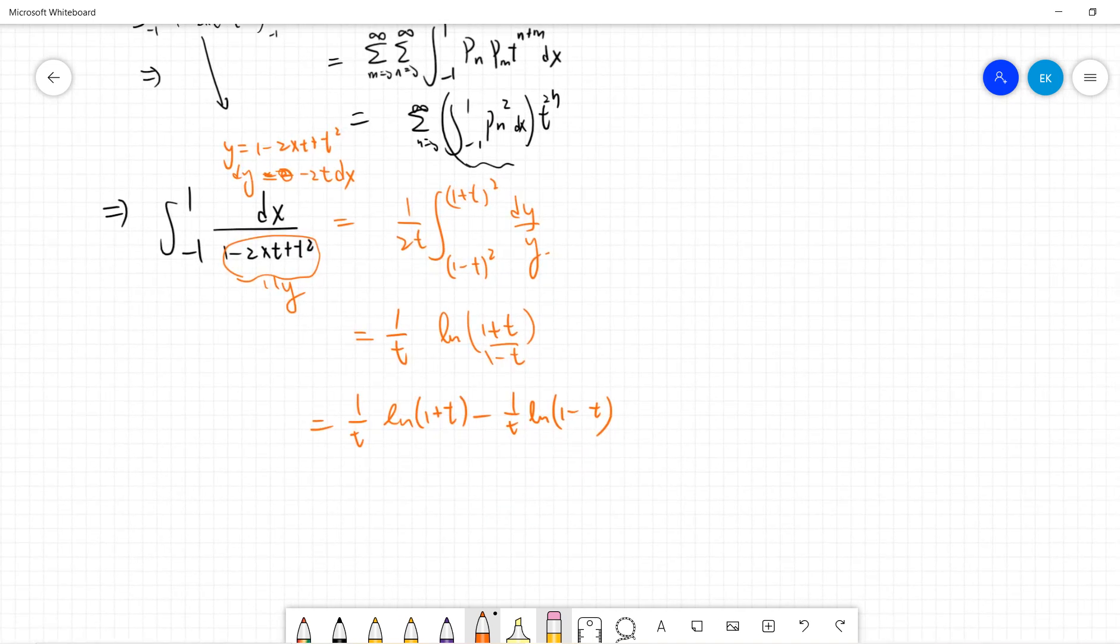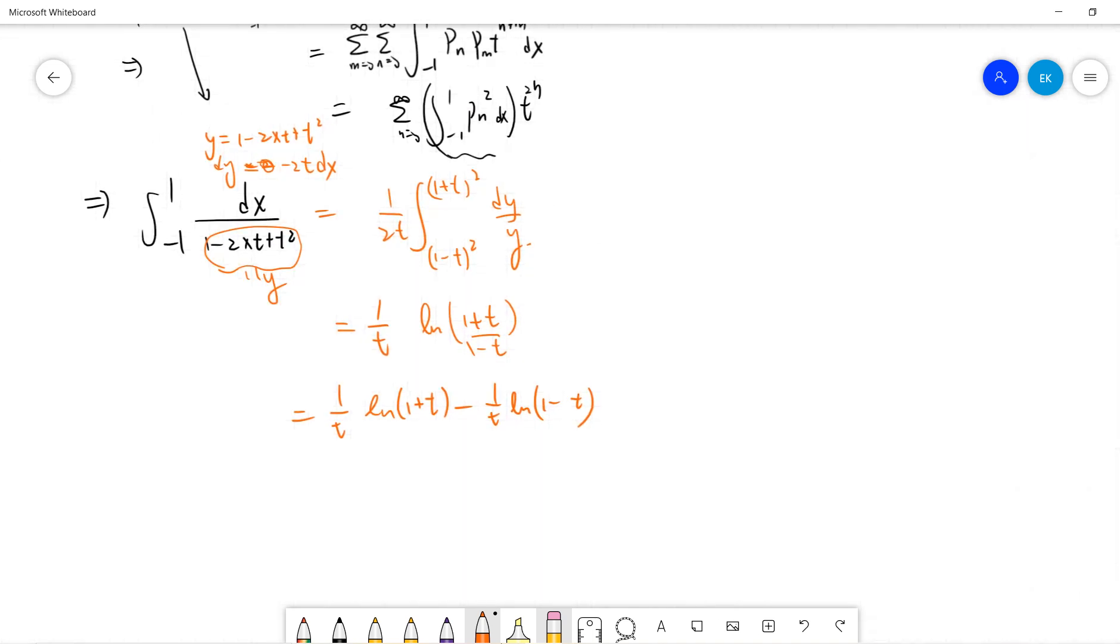And I think everybody knows about this. So log 1 minus t is just equal to minus t minus t squared divided by 2 minus t cubed, and log 1 plus t will be t minus t squared divided by 2 plus t cubed. So this is basically from a Taylor expansion.